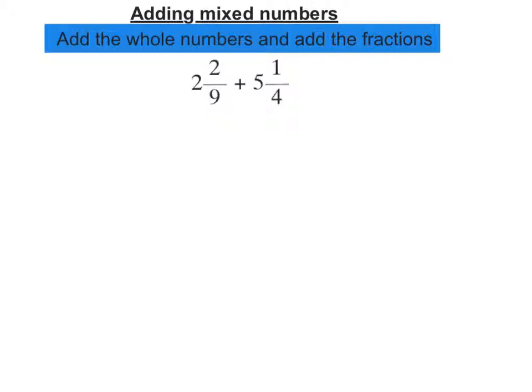So here, if we add the whole numbers, well, our whole numbers are 2 and 5, so that's 7, they're our whole numbers.